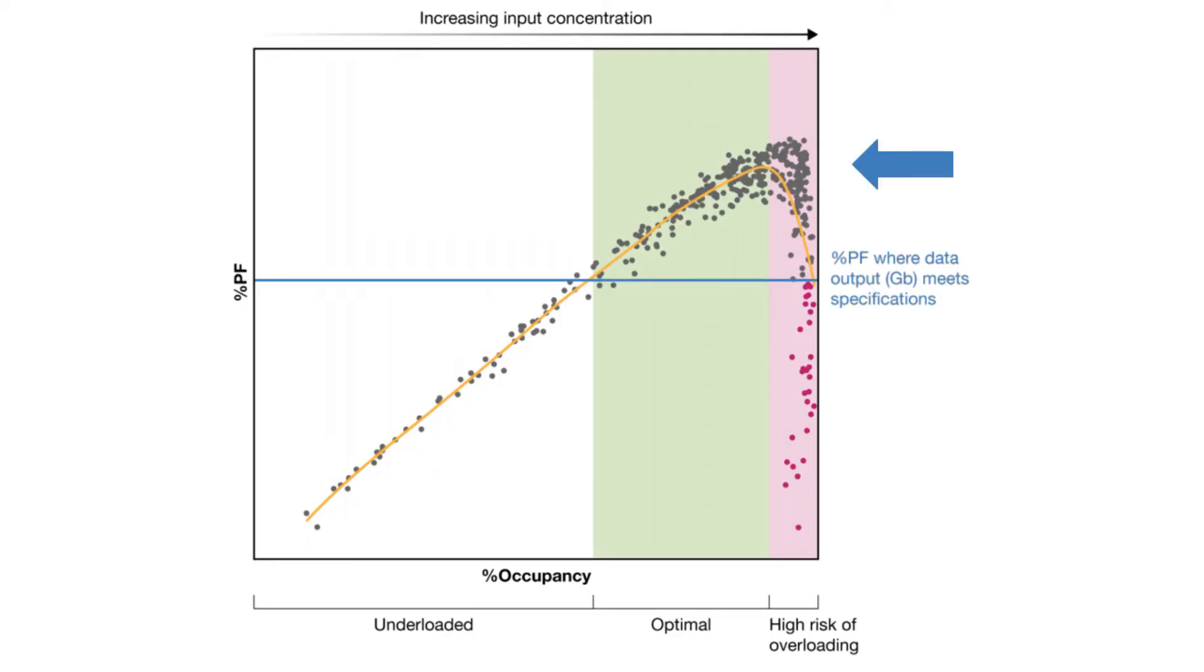Note that some data points in the red region may still maintain expected levels of percent passing filter, but some will fall well below desired levels. Runs with such a high percent occupancy will have a much higher chance of their percent PF falling below the level where specifications for data output can still be met. The red dots indicate where this has happened and represent overloaded flow cells.